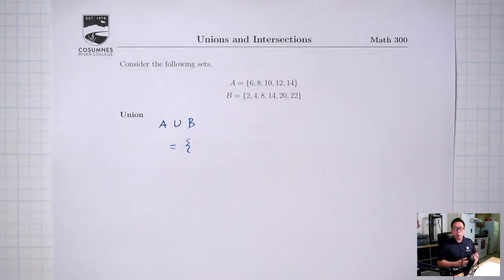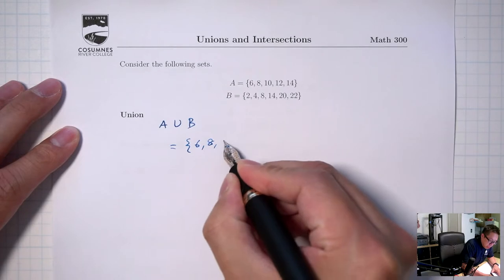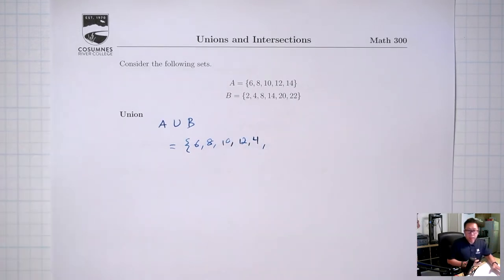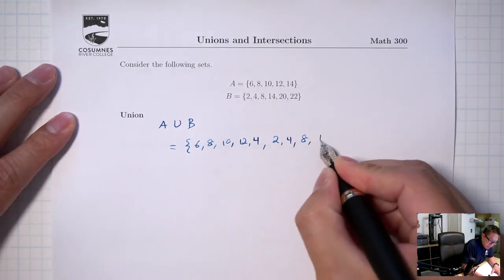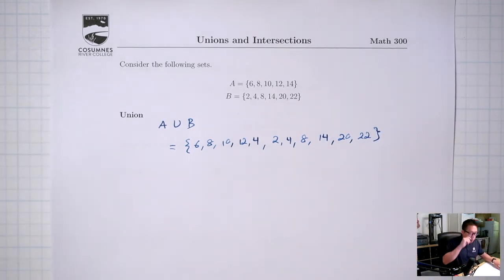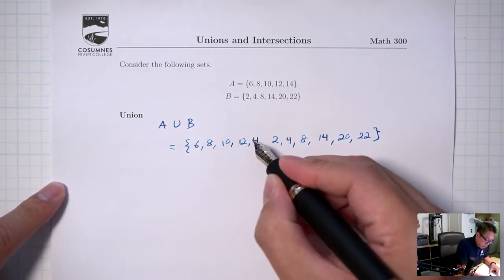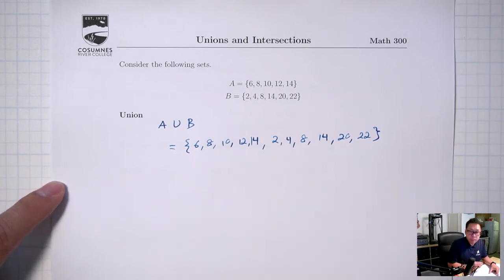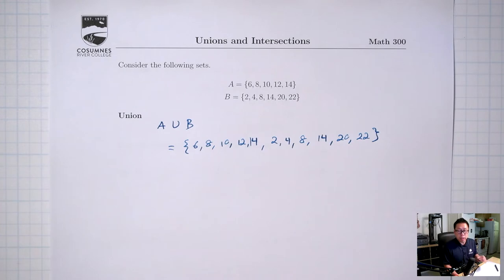There are a couple different ways you can write out the union. One way — which I don't recommend, so don't write this part down — is to just write out every element of the first set and then add on all the elements of the second set. That's perfectly fine, but notice that I have some repeats: a repeat of 8 and a repeat of 14, which is totally fine. As I said in the last lecture, when we list out the elements of a set, repetition doesn't matter and the order doesn't matter.